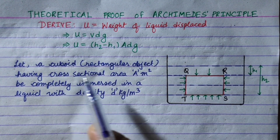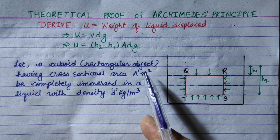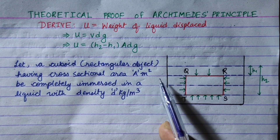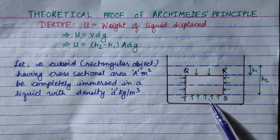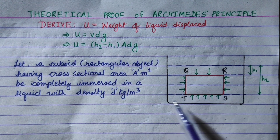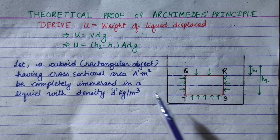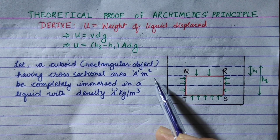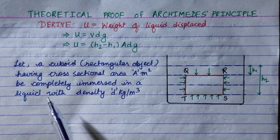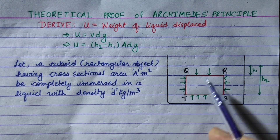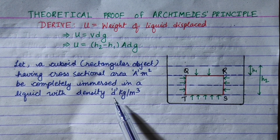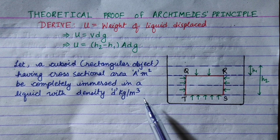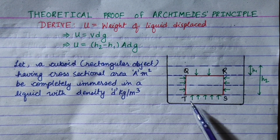Let a cuboid, or rectangular object, having cross-section area A meter squared — your rectangular object QRST — here the cross-section area or base area is A meter squared. The liquid density is d kg per meter cube, and the object is completely immersed.